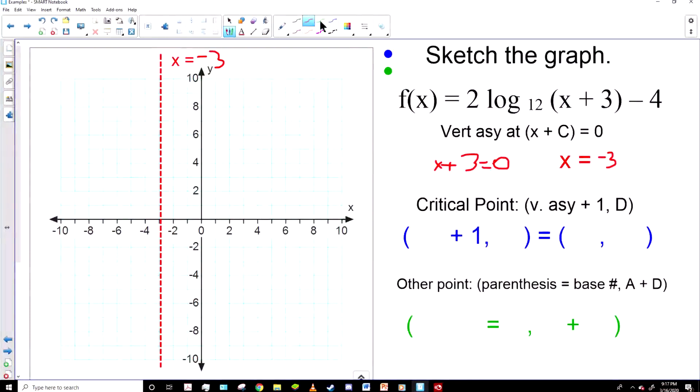And to find the critical point, we'll add the asymptote plus one. So negative three plus one is negative two. And then the D term on the end there is negative four.